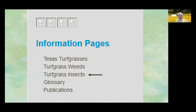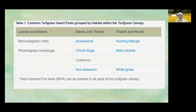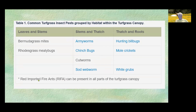For insects, the aggieturf website also has a dedicated page. Common turf insects include Bermuda grass mites, mealybugs, armyworms, chinch bugs, cutworms, and soil webworms. For thatch and root issues, you may find hunting billbugs, mole crickets, and white grubs — white grubs are common in most soil around here. Red imported fire ants are present in all parts of the turf grass canopy, so be careful.